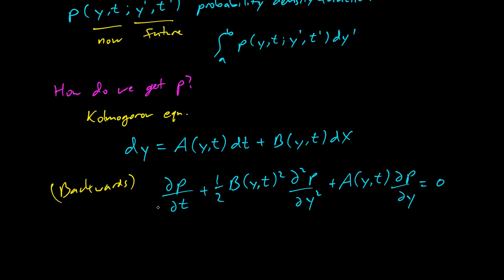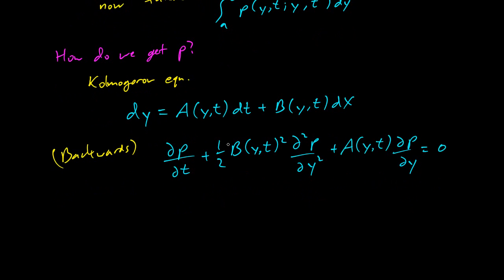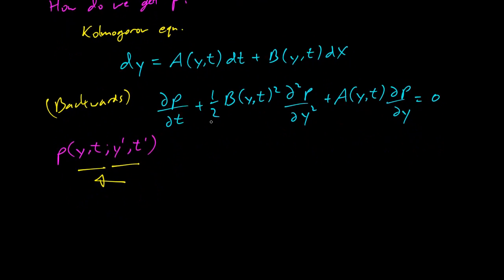Here's our backwards Kolmogorov equation and remember we have p of y,t; y prime, t prime. You can see this is backwards because we're solving for p as t and y change, so we're given this and we're finding this side, which is why it's backwards. We have a way of finding p if we can solve differential equations.